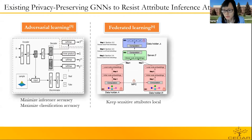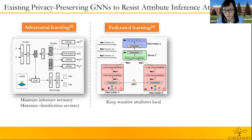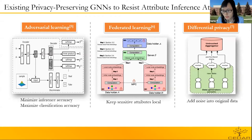The second direction is federated learning. To protect users' data privacy, we keep sensitive attributes local and split the computation graph of GNNs among multiple data holders. Further, use a trusted server to combine the information from different parties and accompany the training process. The third direction is differential privacy. The principle of differential privacy is to anonymize the original data. Therefore, the model training uses only part of the users' data.